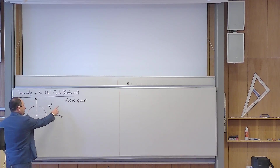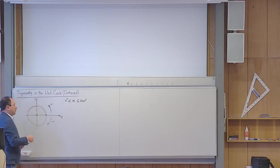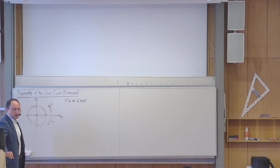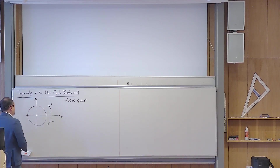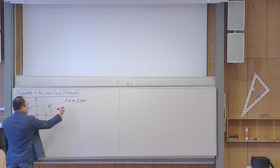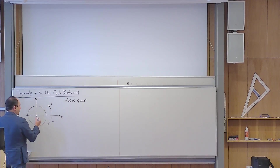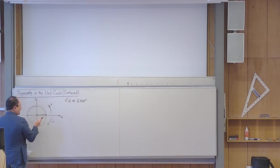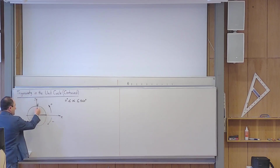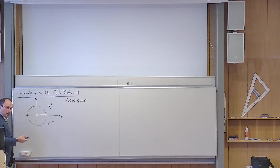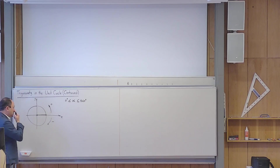In trigonometry, we want to relax these two conditions. We want to talk about negative angles if necessary, and also about angles greater than 360 degrees if needed. Every angle has two arms by convention. The first arm is always here, and the second arm lies somewhere depending on the size of the angle and the direction and sign of the angle.